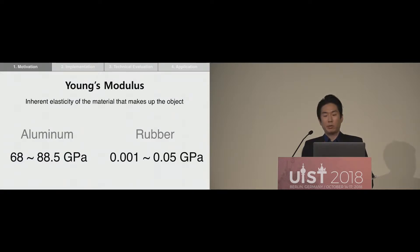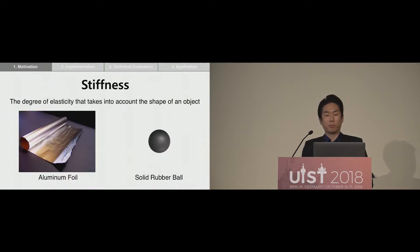Young's modulus is the inherent elasticity of the material that makes up the object. For example, Young's modulus of aluminum is from 68 to 88 gigapascal, while rubber is from 0.001 to 0.05 — meaning rubber shows more deformation for the same force than aluminum. However, not only the property of the material but also the shape of the object has a great influence on the relationship between force and deformation. For example, given the same force, aluminum foil will deform more than a rubber bar. The degree of elasticity that takes into account the shape of an object is called stiffness.